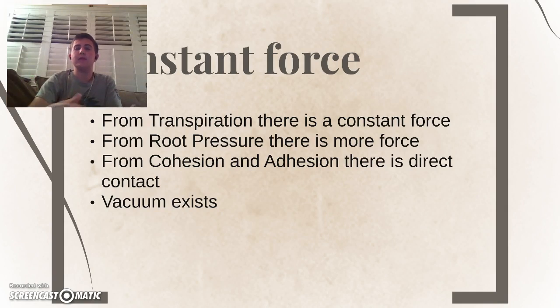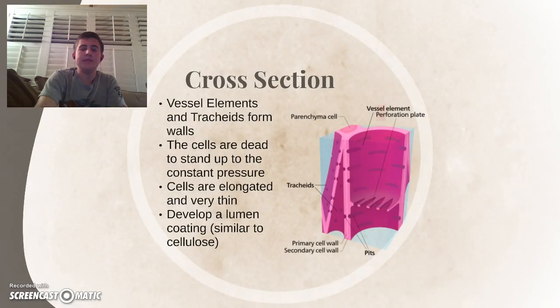To examine this, we're going to look at a cross-section of the xylem. Now, to continue my visual metaphor, we're going to travel up to the tree, to the trunk, where the majority of the xylem tissue exists. To examine why they're dead, we're going to look at this cross section image that I've provided. You can see that the sides of the xylem are composed mainly of these vessel elements and tracheids.